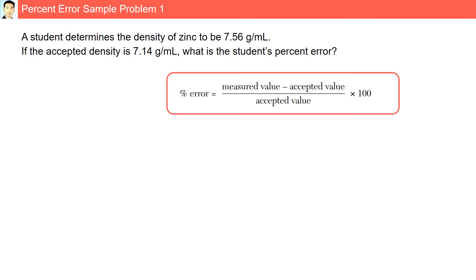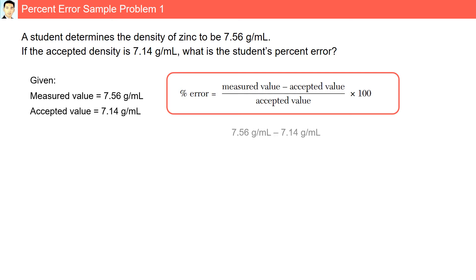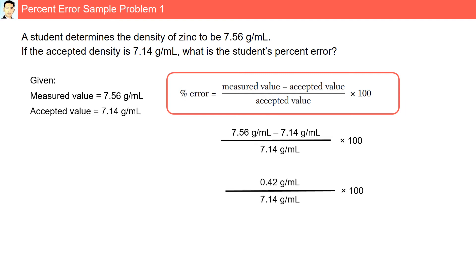The first step is to identify the formula we need to use, then identify the given. Here, the measured value is 7.56 grams per ml and the accepted value is 7.14 grams per ml. Plugging into our formula — measured minus accepted, divided by accepted, multiplied by 100 — we get our final answer: 5.88%.